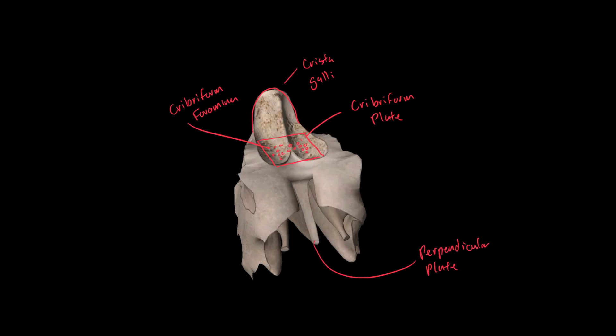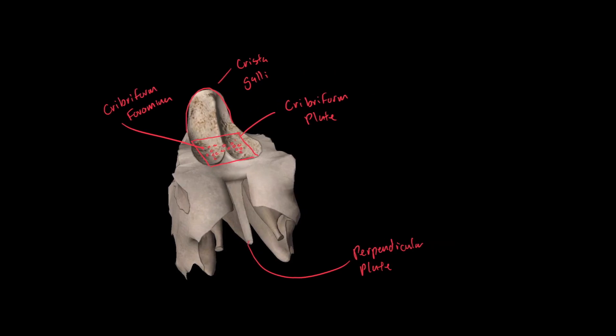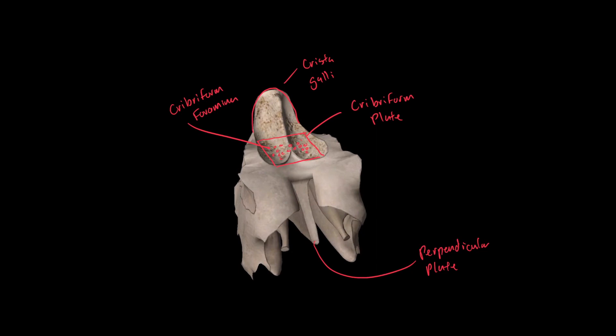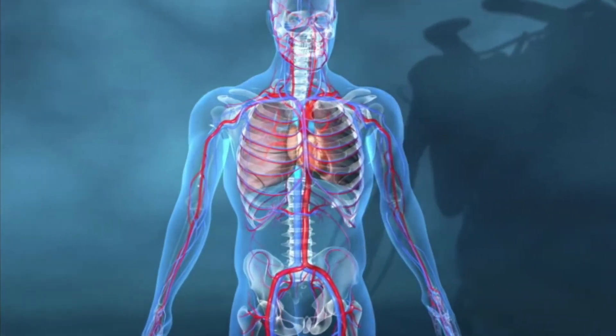Those are all the landmarks we need to learn for the neurocranium. You might ask why we didn't cover the parietal bone — it's very flat with no unique features we need to learn for this course. That's all the landmarks found on the neurocranium. I hope this video was helpful and will help you do well on your exams and quizzes. See you guys next time, bye-bye.